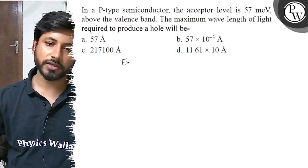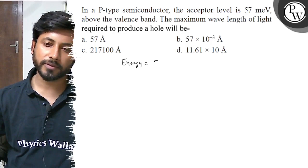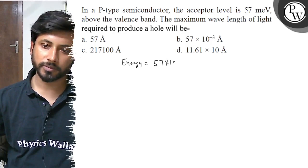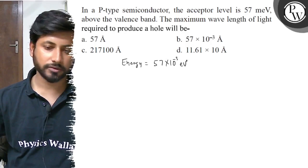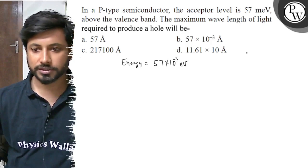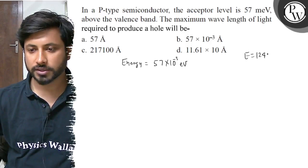So, see, energy E is 57 milli electron volt, 57 into 10 to the power minus 3 electron volt. And this energy is 12,400 electron volt divided by lambda.